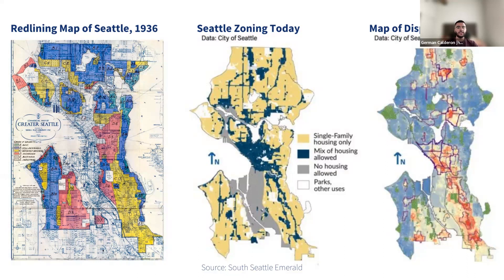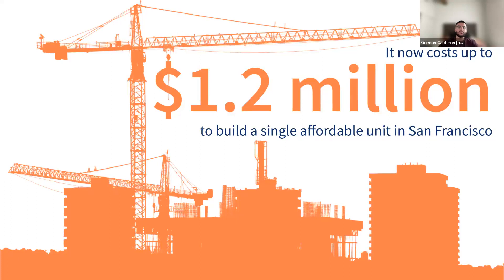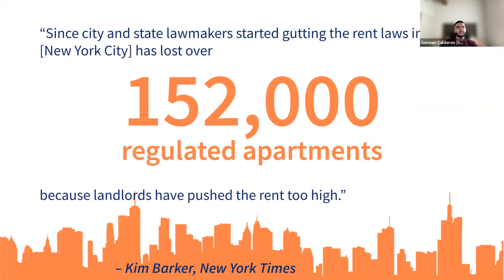Communities deemed risky for investment didn't receive any investment at all, and these neighborhoods were predominantly home to communities of color — not by accident. The hazardous ratings were in large part based on racial demographics, making redlining a discriminatory and racist policy. It made it hard for residents to get loans for home ownership or maintenance. Consequently, redlining led to cycles of disinvestment, underdevelopment, and exclusion, and those historically redlined communities are often the very same ones at risk of gentrification today.